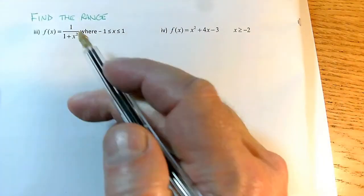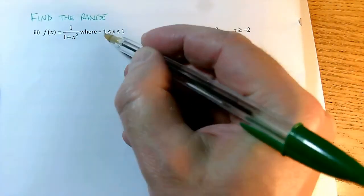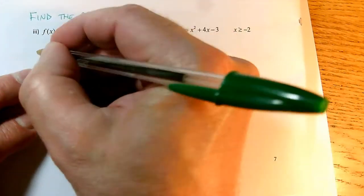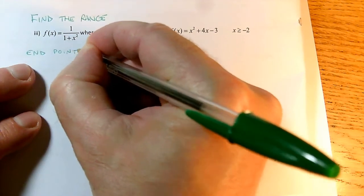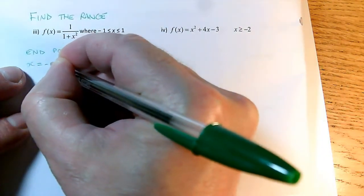Following on from the last video, we're still finding the range, and we've still got some endpoints. So if we start with endpoints for the first one, we've now got a lowest value of x is minus 1. So x equals minus 1.